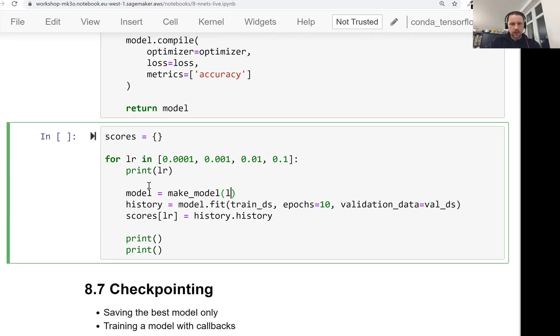Model. Learning rate is LR. And then we train for 10 epochs using this train data set. Validation data set. I hope I didn't forget anything. Let's run. So it will take some time. We'll just run, go away, and come back in 10-15 minutes.